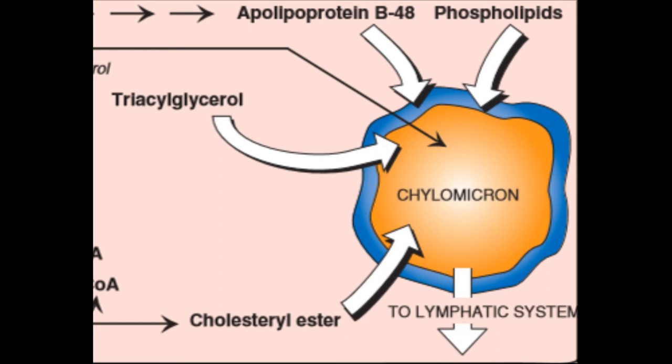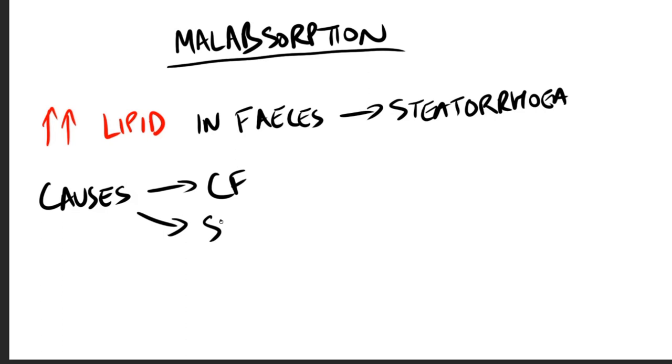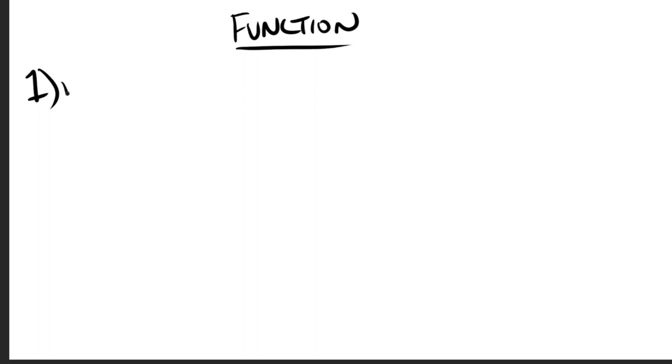Lipid malabsorption results in increased lipid in the feces, which is called steatorrhea, and it can result from two very common reasons. One is cystic fibrosis, which leads to poor digestion and then steatorrhea, and the other one is a shortened bowel, which decreases the absorption and leads to steatorrhea.